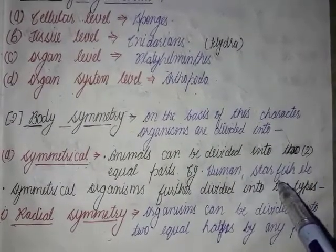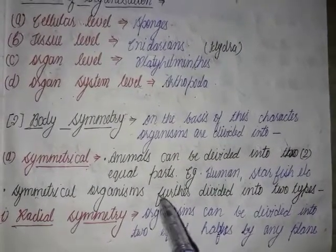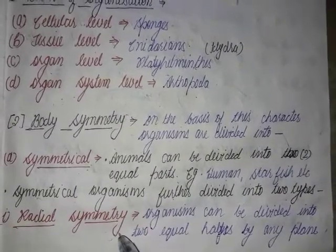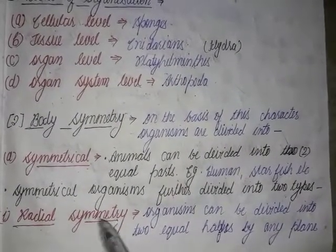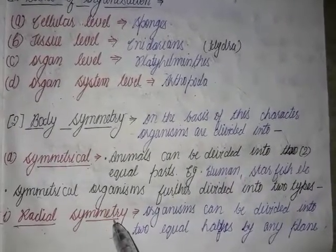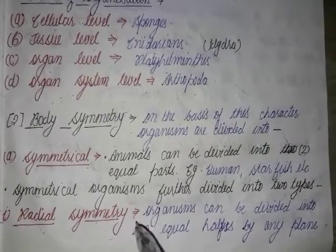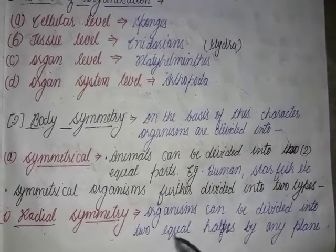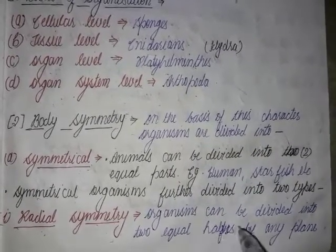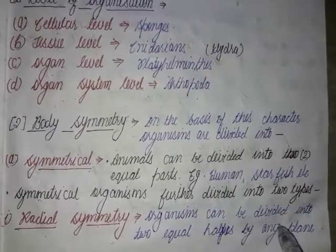Examples of symmetrical organisms include humans, starfish, and hydra. Symmetrical organisms are further divided into two types. The first is radial symmetry. Radial symmetry is a special type of symmetry in which the animal can be divided into two equal halves by any plane of division passing through the central axis. Hydra and starfish are examples of radially symmetrical organisms.